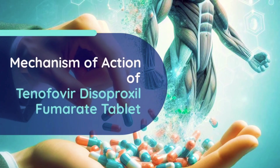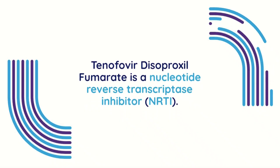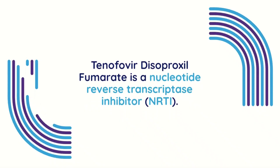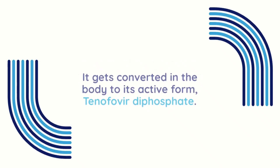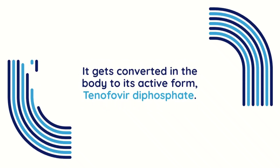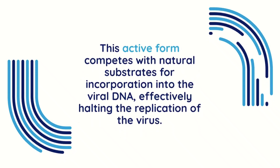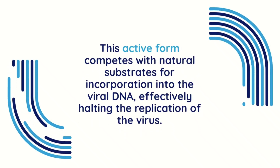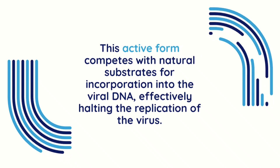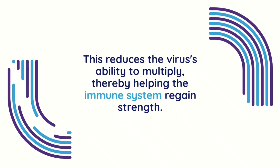Now let's understand how this medication works. Tenofovir disoproxyl fumarate is a nucleotide reverse transcriptase inhibitor. It gets converted in the body to its active form, tenofovir diphosphate. This active form competes with natural substrates for incorporation into the viral DNA, effectively halting the replication of the virus. This reduces the virus's ability to multiply, thereby helping the immune system regain strength.